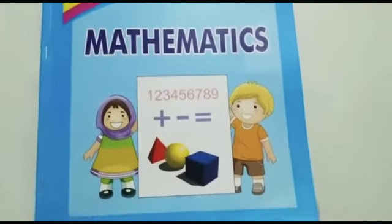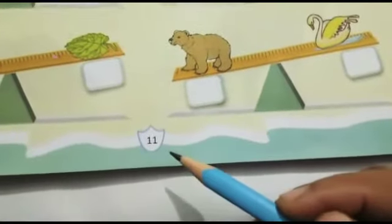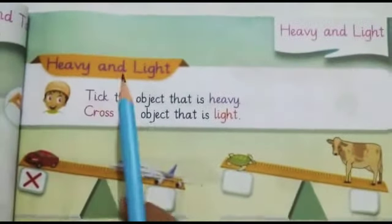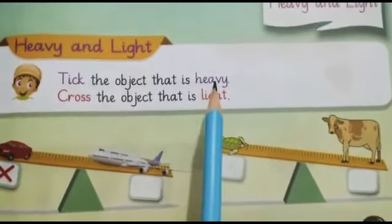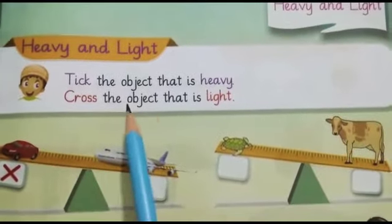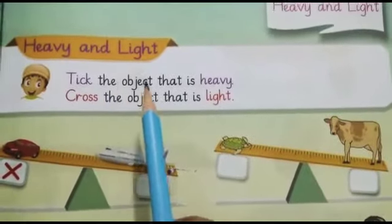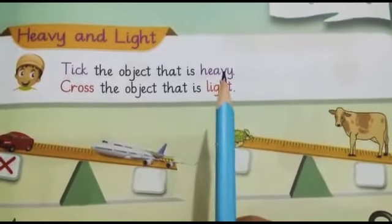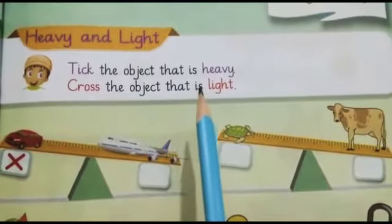Now come to your book. Open your math book at page number 11. Heavy and light — tick the object that is heavy, cross the object that is light.